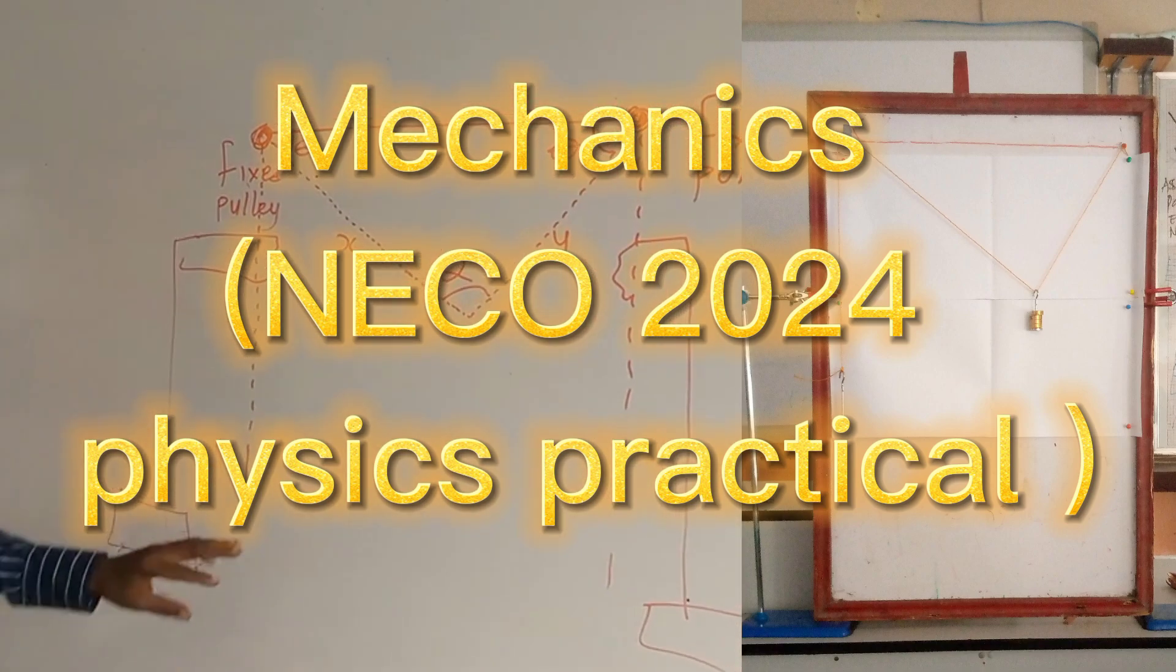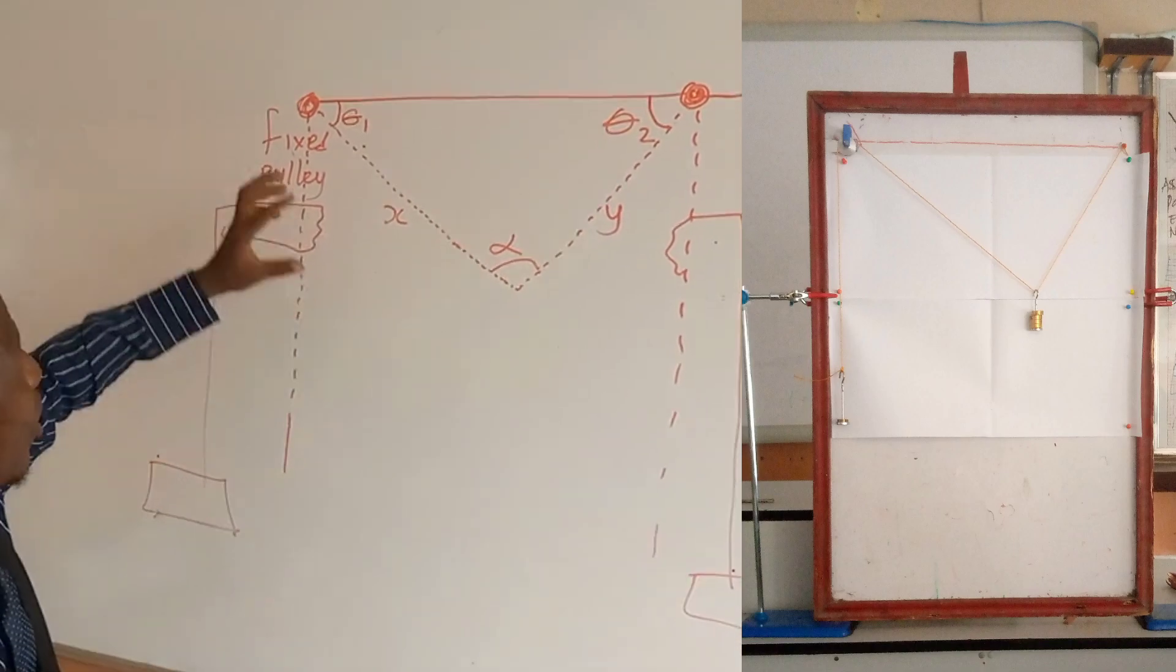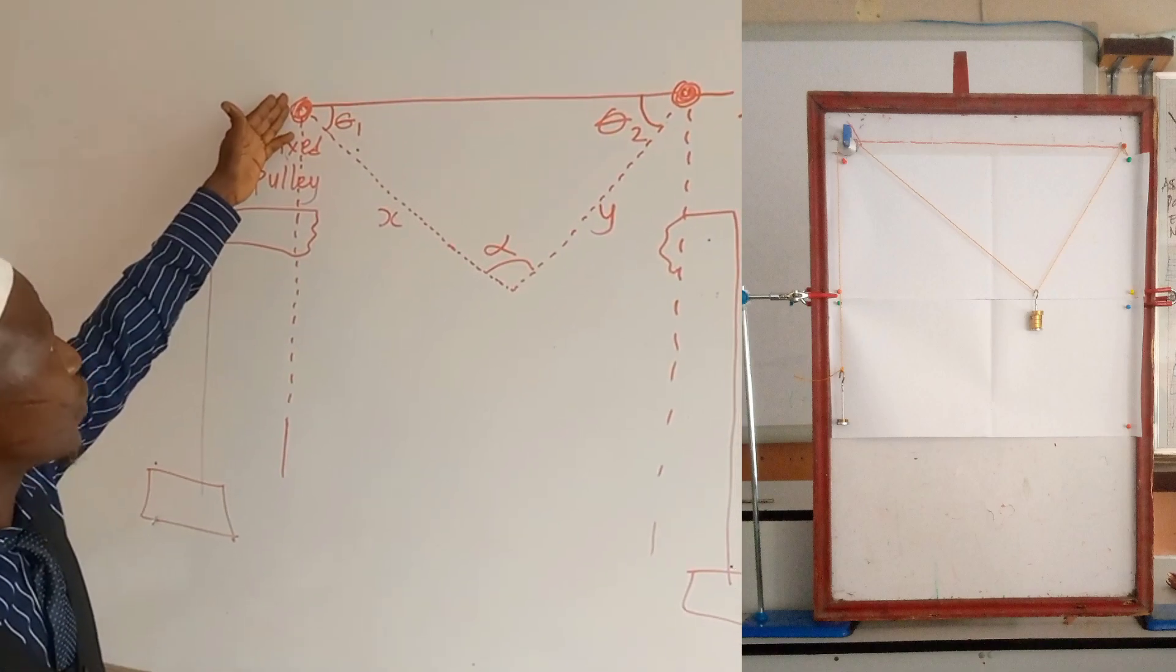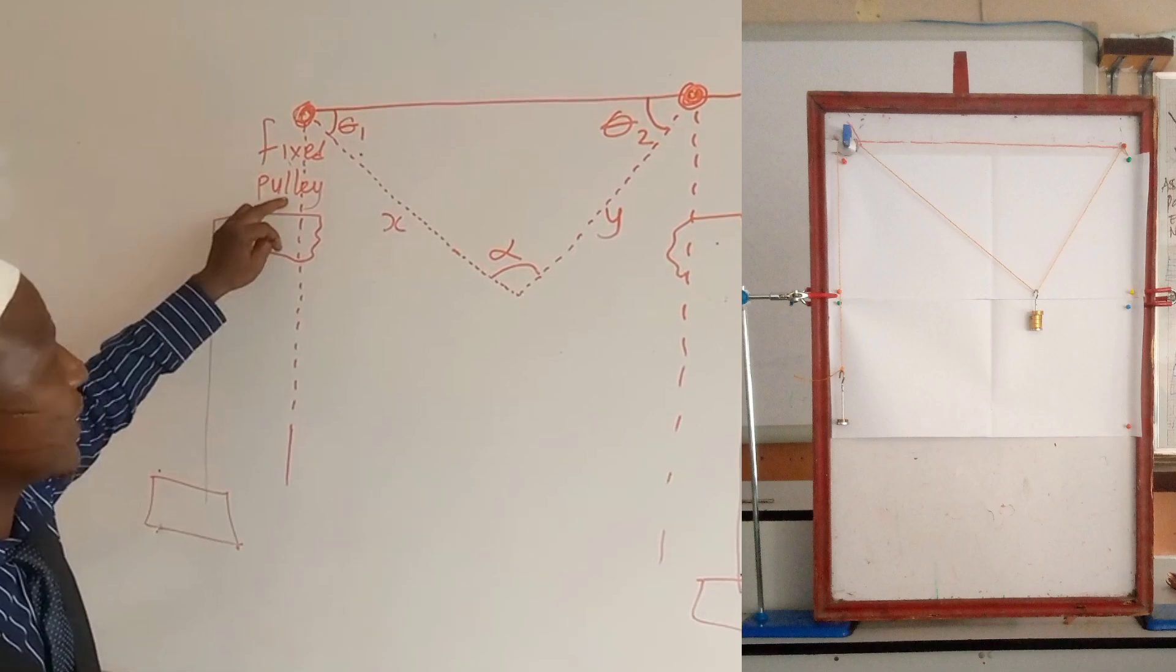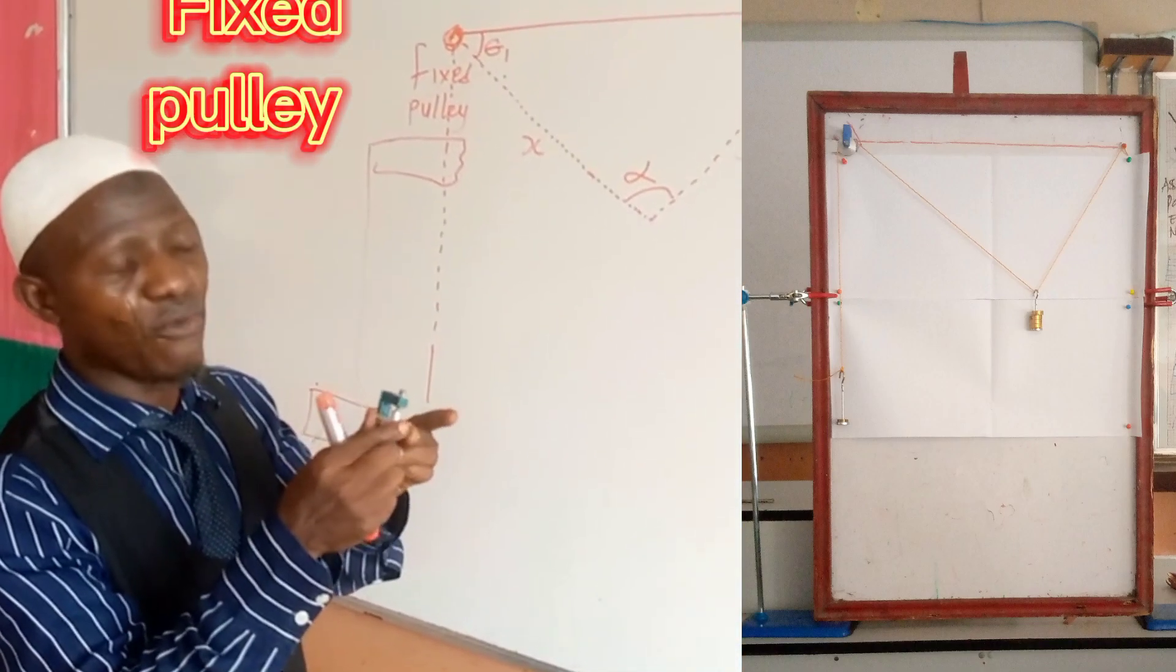Depends on the shape. So if the shape is like this, automatically you are going to have one of the sides of your board to be fixed with what? Fixed pulley. Like this. There is a fixed pulley. So make sure that it's not moving.